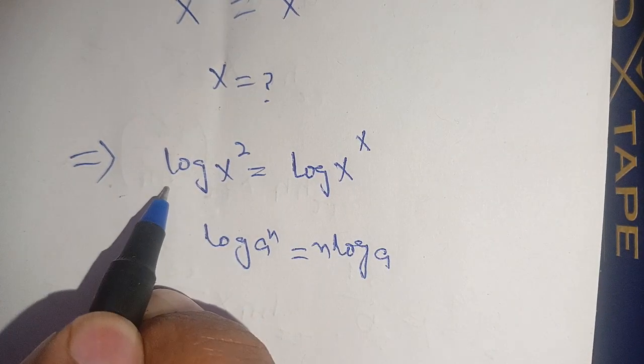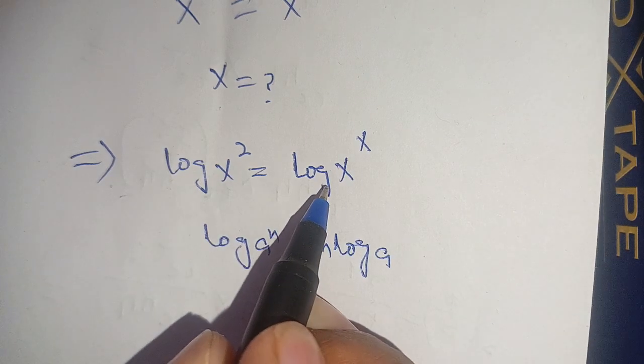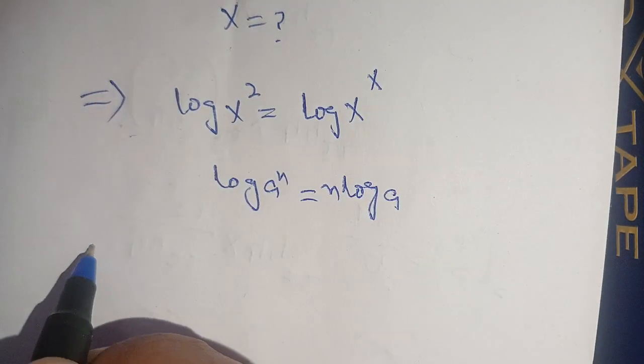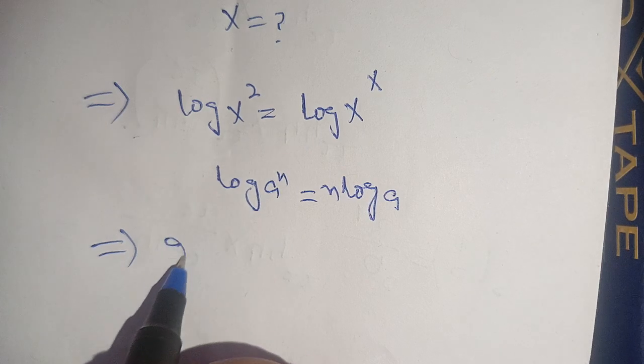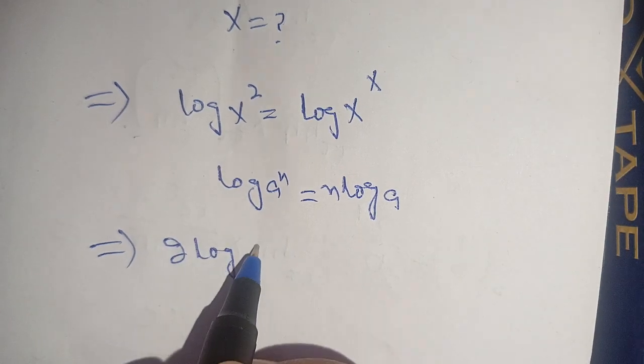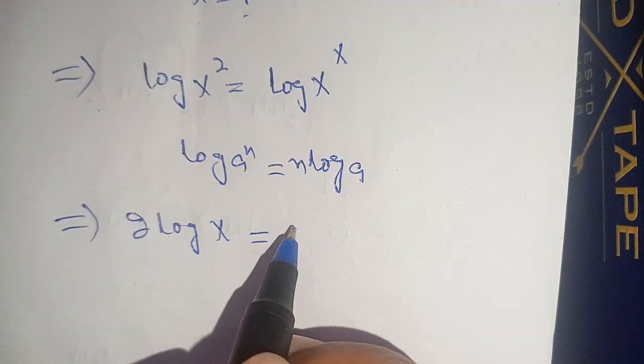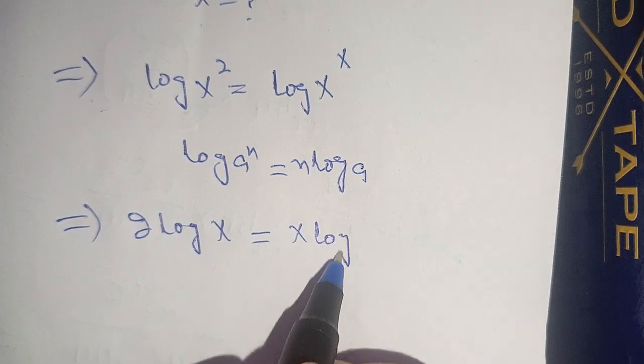On using this identity on both the left hand side and the right hand side, we have 2 log(x) = x log(x).